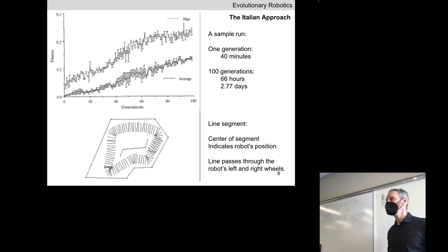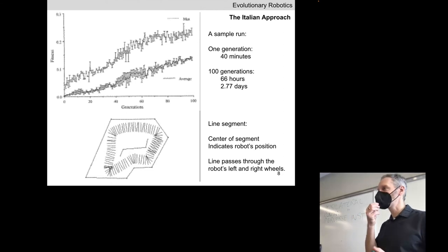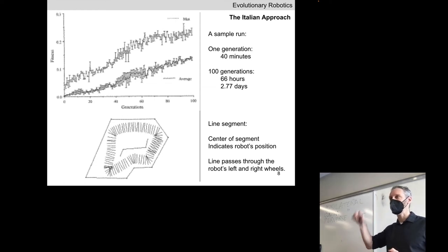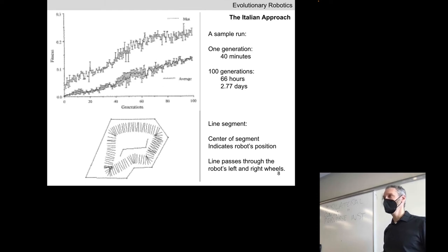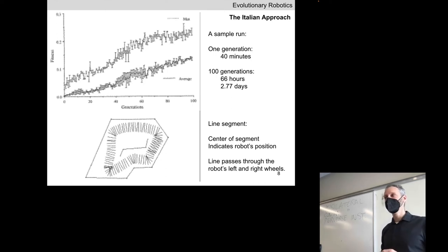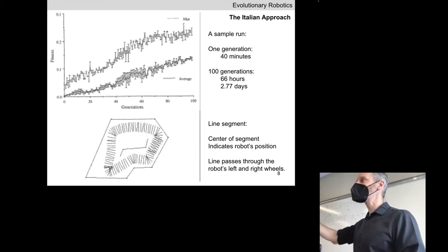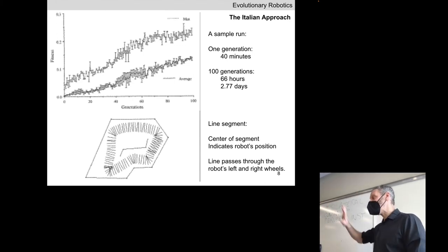Years after this, I was involved in a similar experiment where we sat there night and day, pressing the enter key every 20 seconds to send the next neural network to the robot. It took quite a while — extremely boring, and definitely not automated. But in some cases, doing things directly on the hardware is faster than trying to create an accurate simulator of your robot.